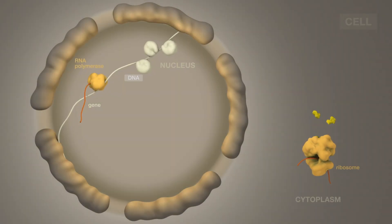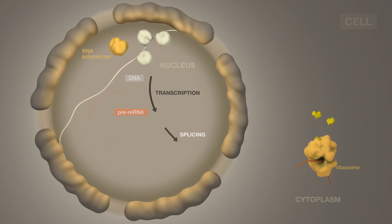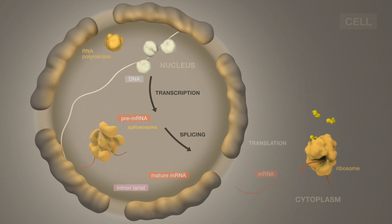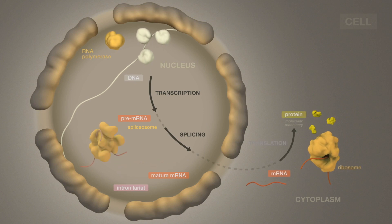The process of splicing genetic information is like editing a tape, much like joining pieces of magnetic tape or projection film. In cells, pre-messenger RNA splicing, the removal of non-coding introns, is a central step in gene expression.